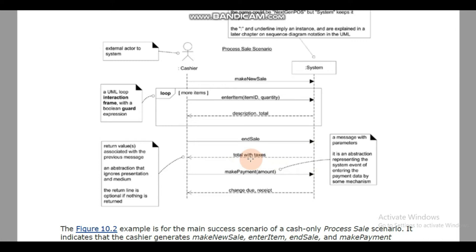In response to 'end sale', the system will provide total along with taxes. After that, the payment entered by the customer will go into the system. The amount is passed as a parameter to the system. The system in return provides change due — if there is any change, it will return it — or it will generate and provide a receipt as a response.